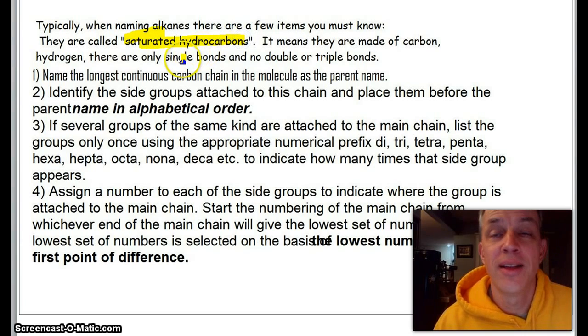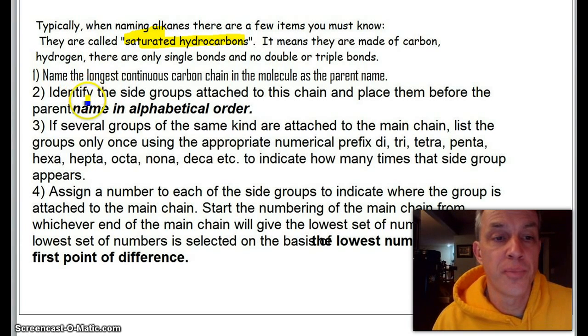Step number one: you want to name the longest carbon chain in the molecule—that's like the parent name. Count the number of the longest carbon chain. Next, any side groups—think of methyl, ethyl, propyl—if you see those hanging off, you identify them and put them in alphabetical order. Those go in front of the parent name.